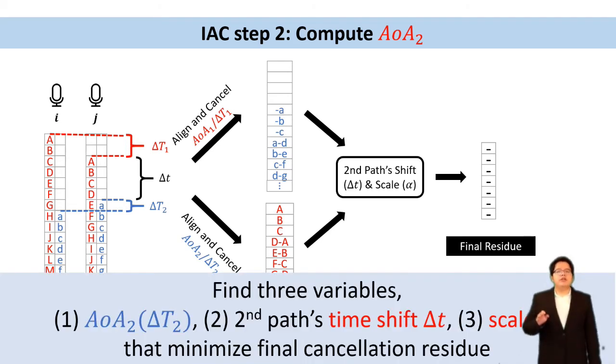So this concludes our finding. Our job is to just find the three parameters, the delta T2, the time shift, and the path scale alpha that minimize these cancellation residuals. And then we can claim that this delta T2 is the one we want to find.